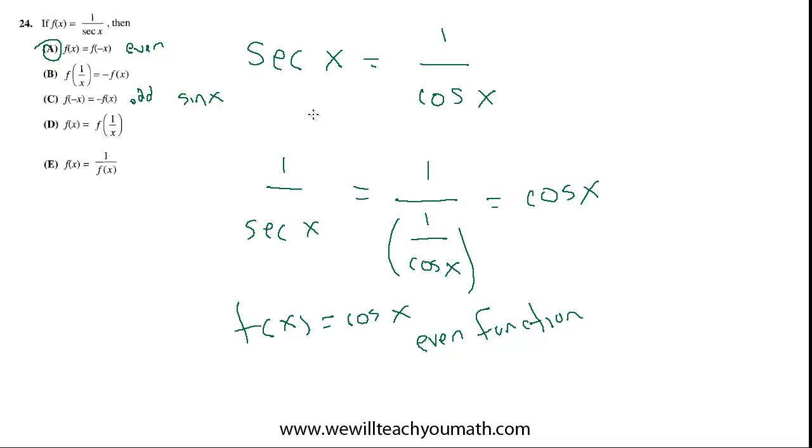But this is secant. And cosine is even, so secant is just the reciprocal of cosine, so that's still even. Sine would be odd. Cosecant would be odd. These other ones that take reciprocals and change signs, you can test these. None of these are going to work.